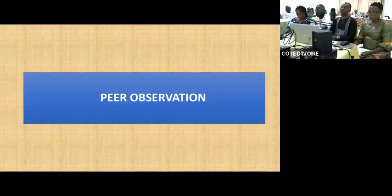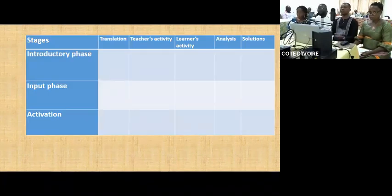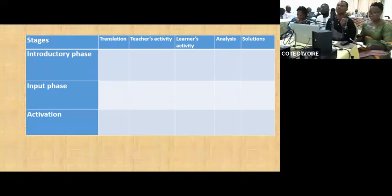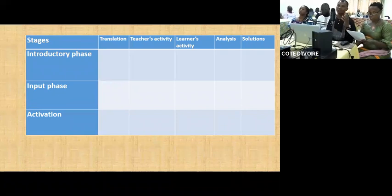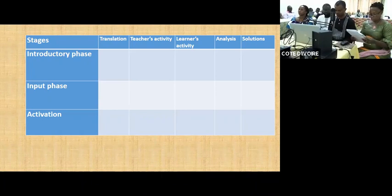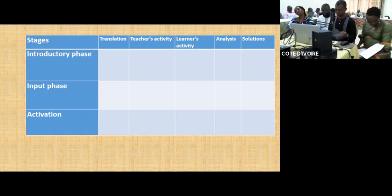The second tool we used was peer observation. We designed a chart — it looks like a lesson plan, but it's actually a chart showing the unfolding of the teacher observation process. There are many stages: the introductory phase, the input phase, and the activation. We noticed that in the introductory phase, students couldn't answer questions because they didn't have the appropriate language to do so.